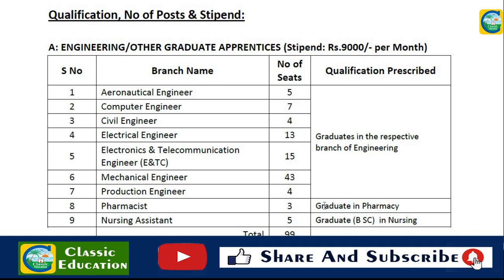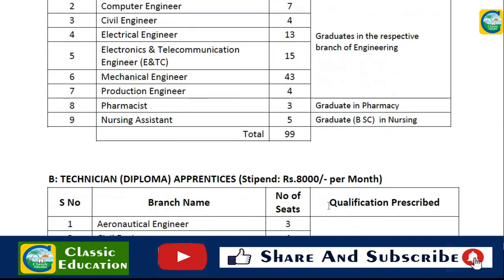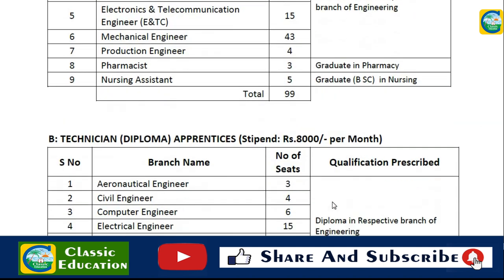This is a 1-year period program. If you have a degree in Production Engineering, you are eligible. You are eligible in the respective branch. You are also eligible in pharmacy. If you want to join this program, graduation is required. For Nursing Assistant, a graduate BSc in Nursing is required.